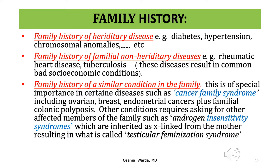Family history of hereditary diseases such as diabetes and hypertension, chromosomal abnormalities, and familial non-hereditary diseases such as rheumatic heart disease and tuberculosis — which result from common bad socioeconomic status and are not hereditary. Family history of similar conditions has special importance in cases such as cancer family syndrome or Lynch syndrome, including ovarian, breast, and endometrial cancer plus familial colonic polyposis. Other conditions requiring family history include androgen insensitivity syndrome, inherited as X-linked from the mother, resulting in testicular feminization syndrome.